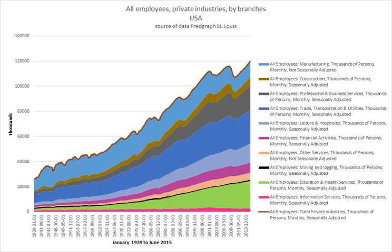Various youth subcultures have been associated with not working, such as the hippie subculture in the 1960s and 1970s, which endorsed the idea of 'dropping out of society,' and the punk subculture, in which some members live in anarchist squats, illegal housing.